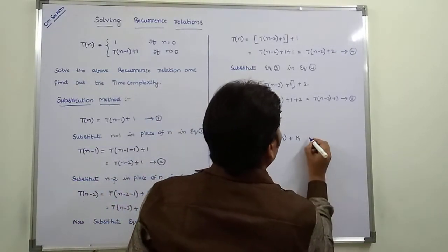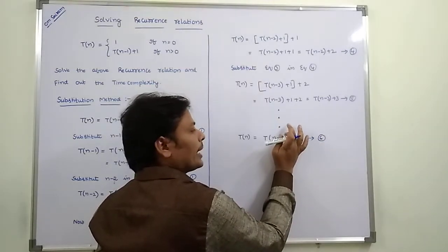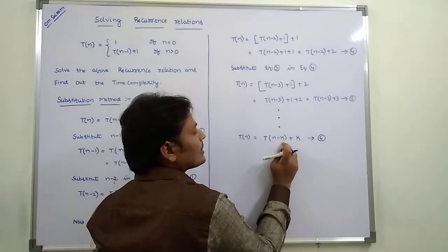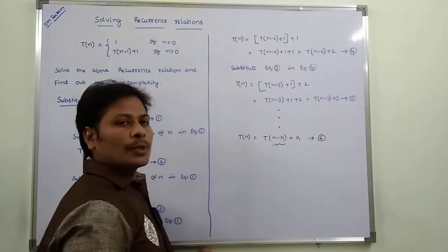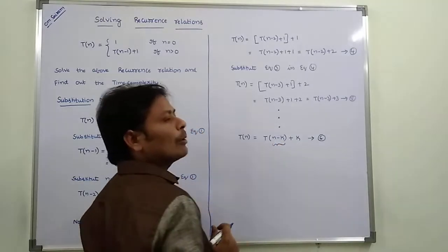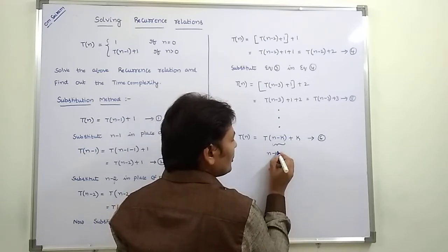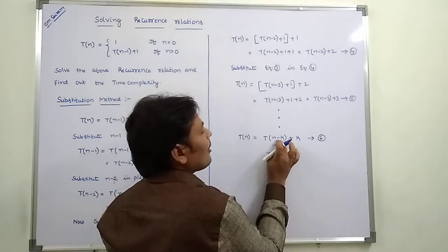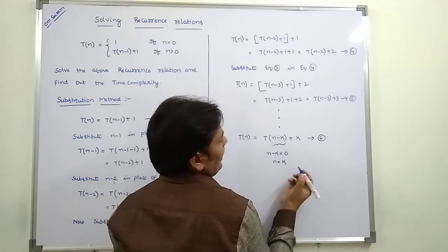So T(n) = T(n-k) + k. Now, n-k should equal 0 so that this term becomes T(0), and T(0) = 1. Therefore n = k.